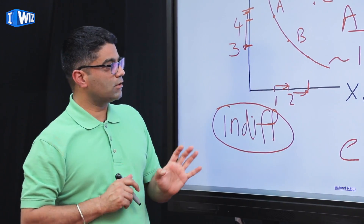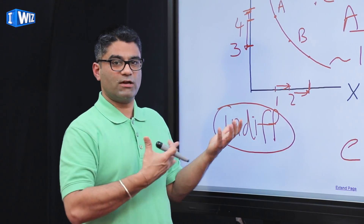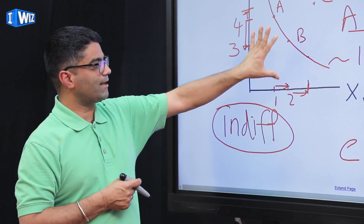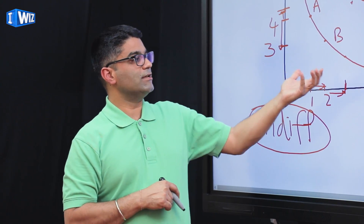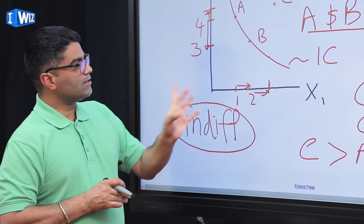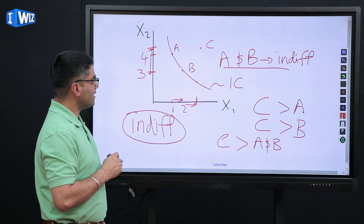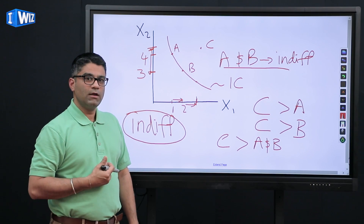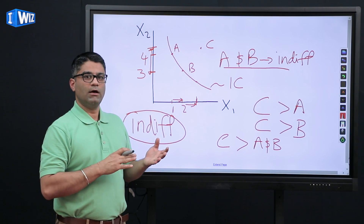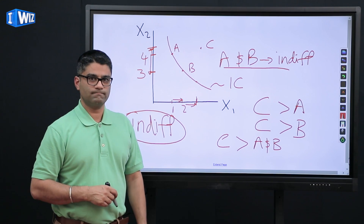An indifference curve is just a graphical representation of what it means to substitute between bundles and remain equally happy. We're graphically representing that information, and eventually we'll put this together with the budget set to complete the model. In the next video we'll talk about the slope of the indifference curve and why it's curved the way it is. Make sure you understand monotonic preferences, being indifferent between bundles, and what an indifference curve is before moving on.